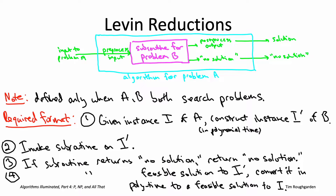We've been seeing a whole lot of reductions throughout this video playlist. So the question you should now be asking is: were we really using the full power of Cook reductions, or were we inadvertently just using Levin reductions anyway? The answer is technically we weren't always doing Levin reductions, but kind of morally we really were.